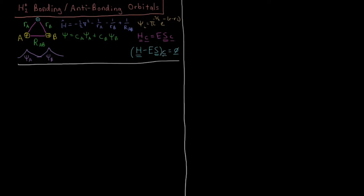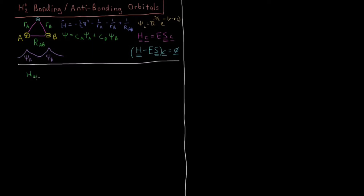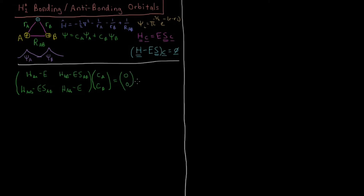Now we want to solve for the values of the coefficients CA and CB for each state using the equation (H − ES)C = 0, according to this matrix form of the Schrödinger equation. We have the matrix with elements HAA − E, HAB − E·SAB, HAA − E, times the vector (CA, CB), equal to the zero vector.